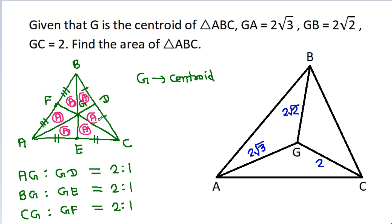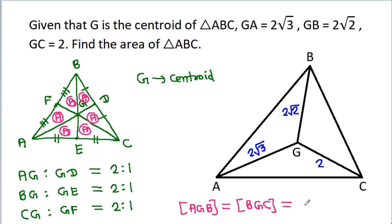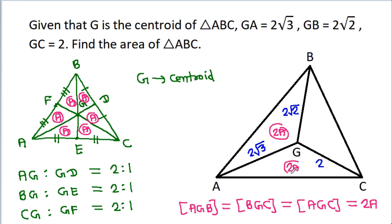Suppose each small triangle area is A. Then the area of triangle AGB equals the area of triangle BGC equals the area of triangle AGC, and together two of them make 2A. So these three areas are equal.